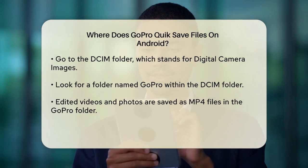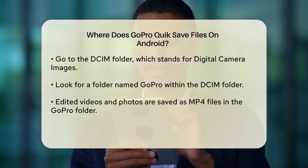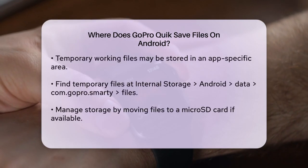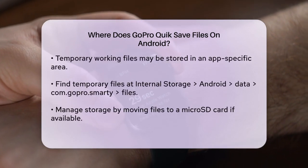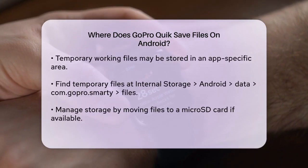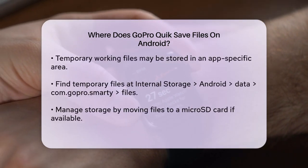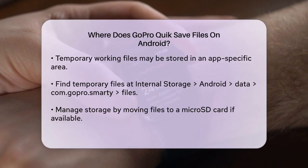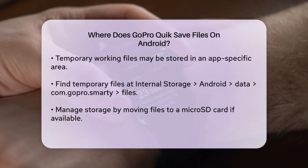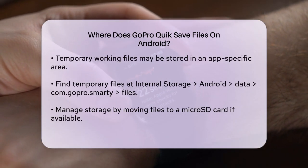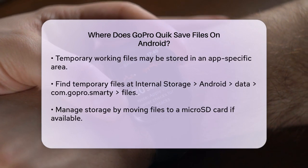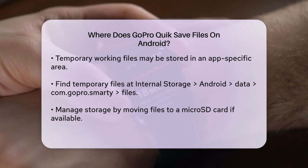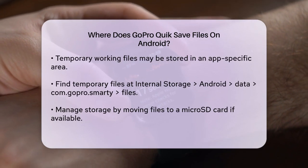In some cases, GoPro Quick might temporarily store working files in its own app-specific storage area while you're editing. You can find these files in Internal Storage > Android > data > com.gopro.smarty > files. However, these files are usually temporary and not where your finished videos will be saved.